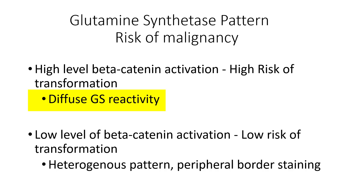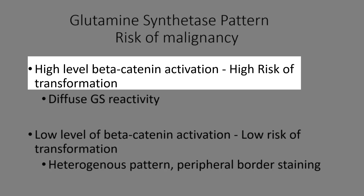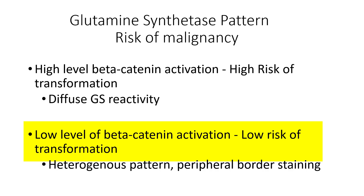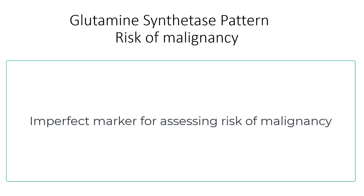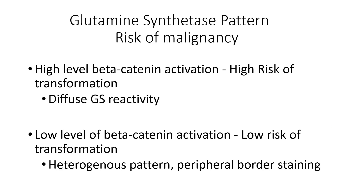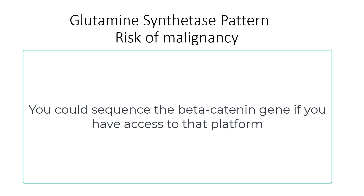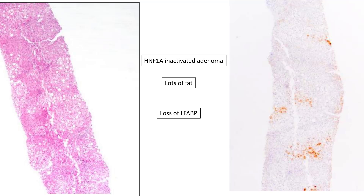So a very quick summary of GS patterns and risk of malignancy in hepatic adenomas. When you see diffuse and strong GS staining, that typically means high-level beta-catenin activation and a high risk of transforming to HCC. When you have either a focal or heterogeneous pattern — less than 50% of strong staining, or peripheral border staining — that translates into a low risk of beta-catenin activation and a low risk of transformation. Is this perfect? No, because what is focal versus diffuse, particularly on a biopsy, becomes very problematic. But it's the best way we have of assessing risk of malignant transformation in an inflammatory type hepatic adenoma.